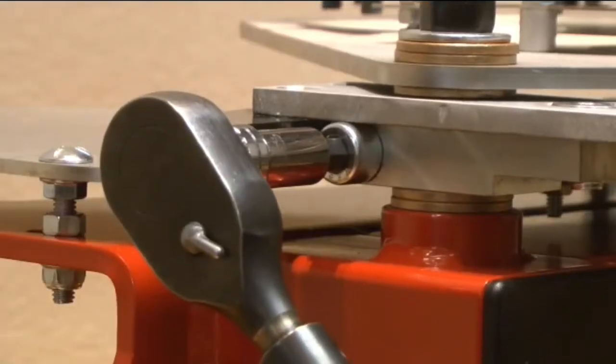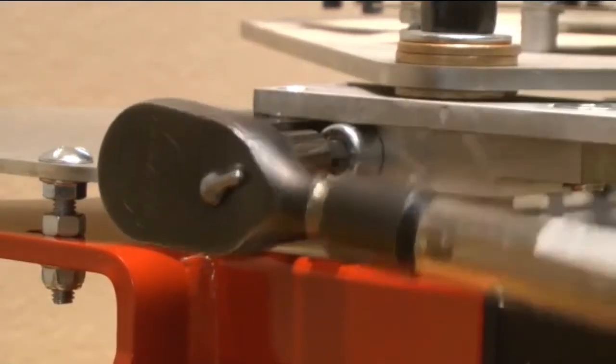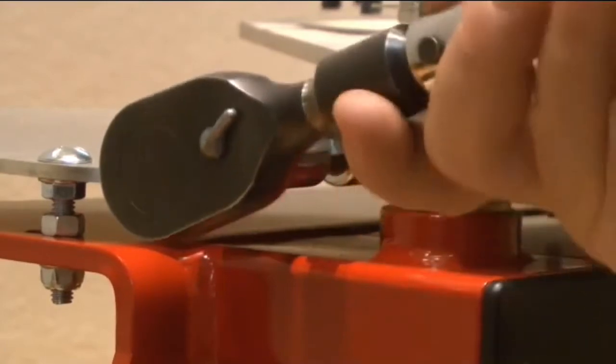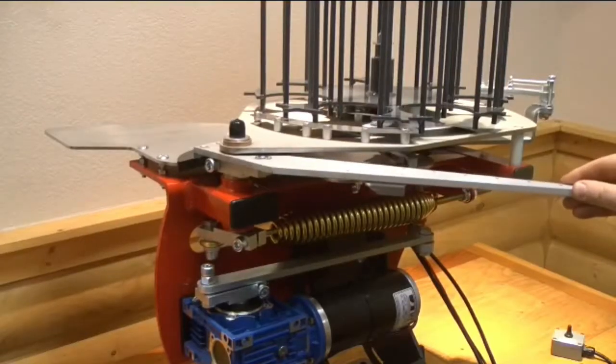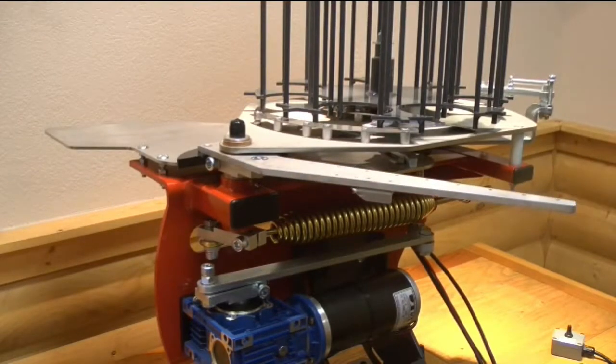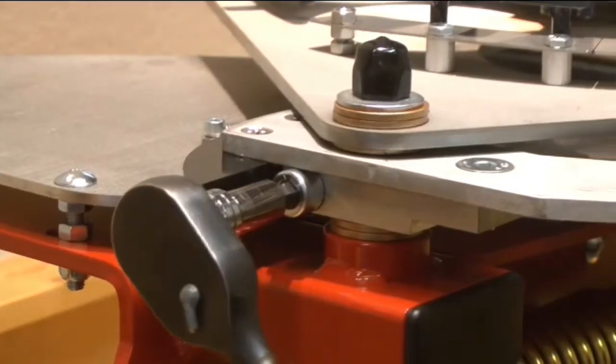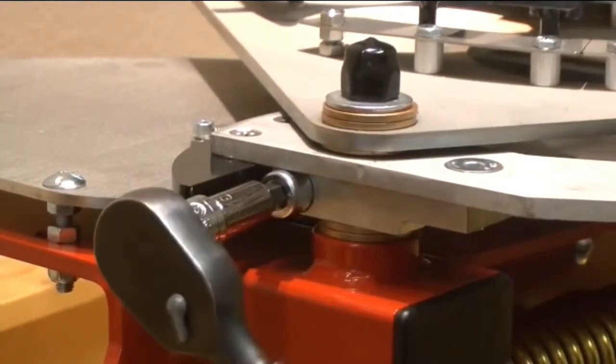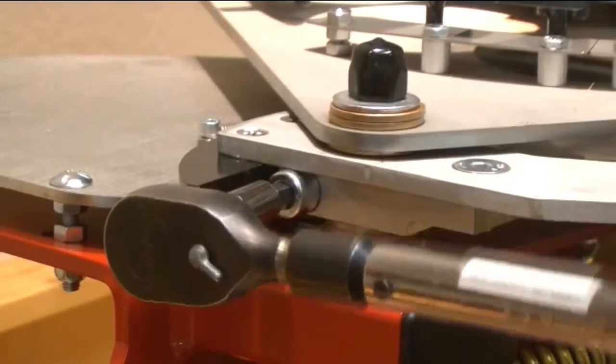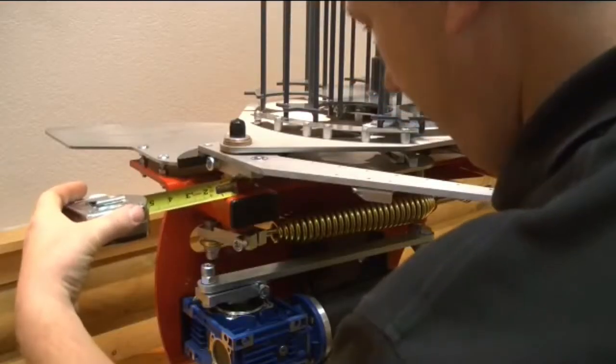If the measurement is incorrect, use a three eighths inch Allen wrench to loosen the arm clamp block bolt so that the clamp block can be rotated on the shaft to achieve the correct measurement. Re-tighten the arm clamp block bolt and re-check the measurement.